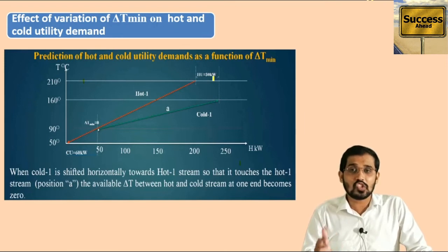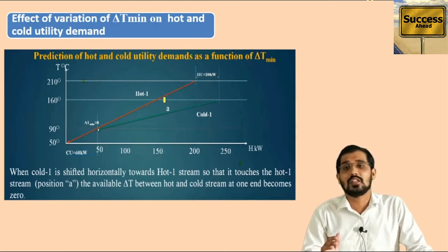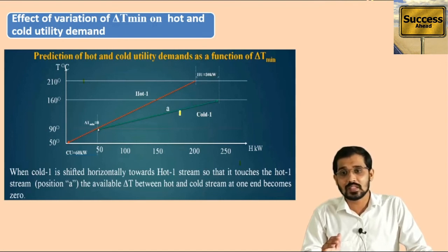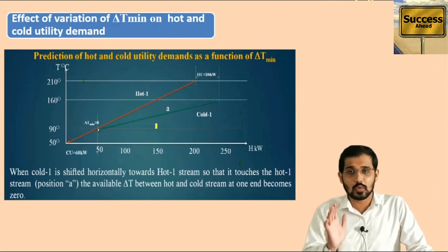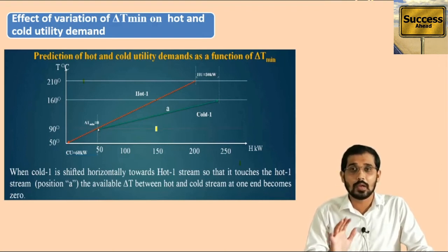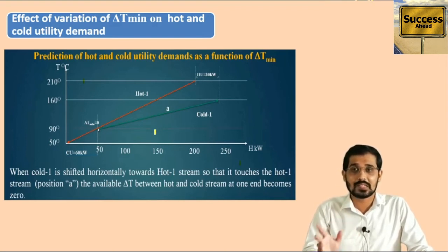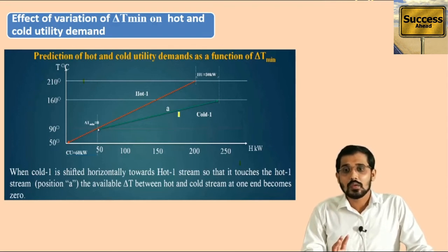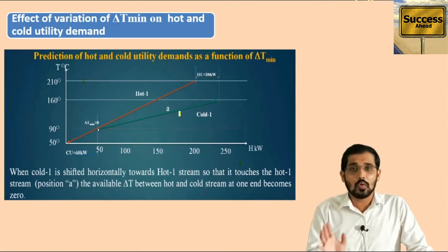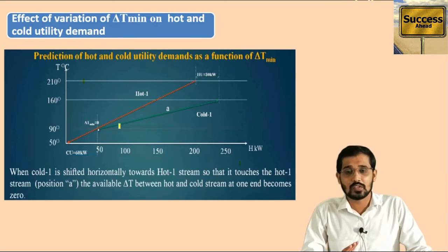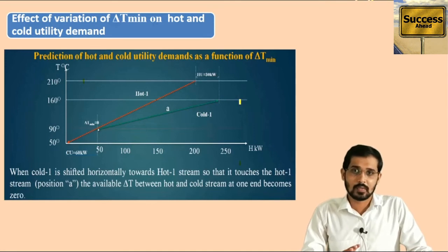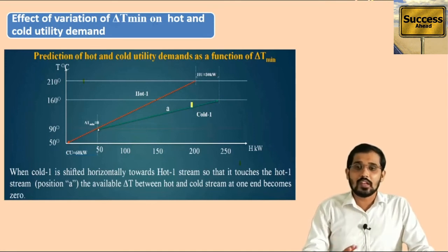Similarly, there is an extra part of the cold stream at the top. To heat this extra part of the cold stream, extra hot utility is required because the hot stream is not available there. That extra hot utility value is Hu, which is 30 kilowatts. This value can change if I move the cold stream away from the hot stream — only horizontal shifting is possible, not vertical. I will show this variation in the next slide.